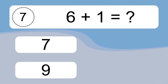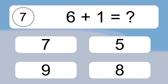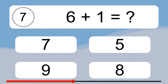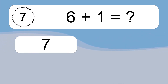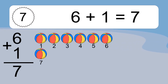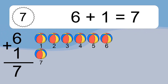6 plus 1 equals what? 6 plus 1 equals 7. Let's count it. 1, 2, 3, 4, 5, 6, 7.